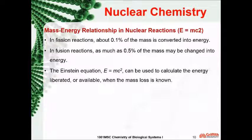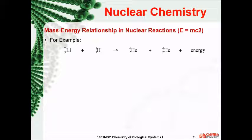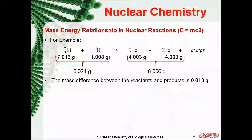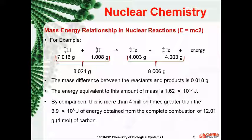For example, in the following chemical reaction, lithium plus hydrogen gives two alpha particles plus energy. The total mass for the reactants is 8.024 grams, and the total mass for the products is 8.006 grams. The mass difference between the reactants and products is 0.018 grams. The energy equivalent to this amount of mass is 1.62 times 10 to the 12 joules. By comparison, this is more than 4 million times greater than the energy obtained from the complete combustion of 12 grams of carbon.